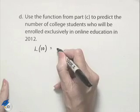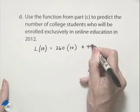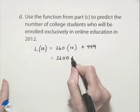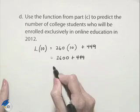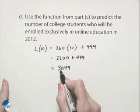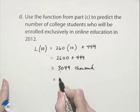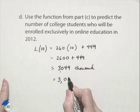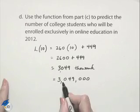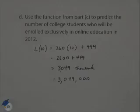So L of 10 is going to equal our slope of 260 multiplied times 10 plus our Y-intercept of 449. That's going to be 2,600 plus 449, which gives us 3,049, but remember, this is 3,049,000. So that's 3,049,000 college students.